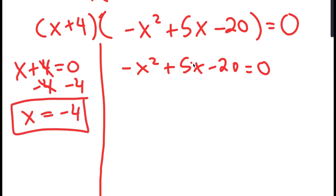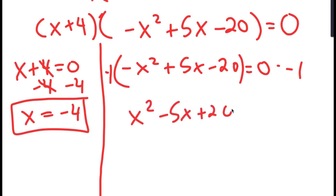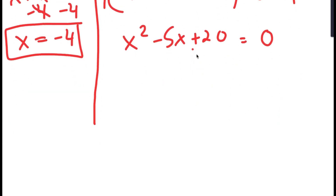Now for negative x squared plus 5x minus 20 equals 0, we have a negative sign in front of x squared, so I'm going to get rid of that by multiplying both sides by negative 1. So I get x squared minus 5x plus 20 is equal to 0.